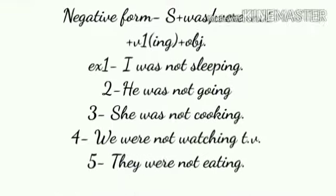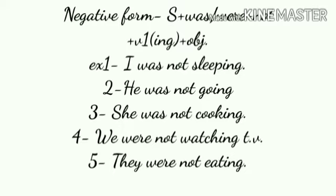Let's see the negative form of past continuous tense. Subject plus was/were plus not plus V1 with -ing plus object. Examples: I was not sleeping. He was not going. She was not cooking. We were not watching TV. They were not eating.